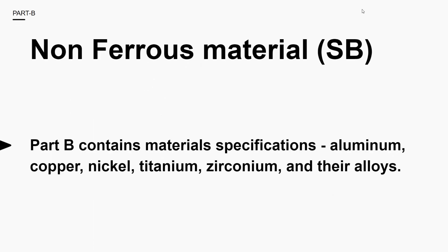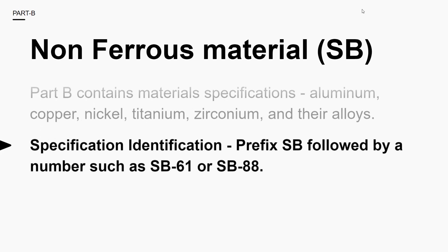In Part B, we deal with only non-ferrous material. It contains material specifications for aluminium, copper, nickel, titanium, zirconium, and their alloys. These specifications are identified by the prefix SB, followed by a number such as SB61 or SB88. Here, SB stands for non-ferrous material.